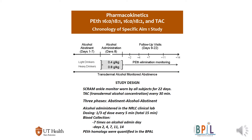This is the design of the study. 52–53 subjects were recruited and agreed to wear a SCRAM ankle monitor for 22 days to measure transdermal alcohol concentration every 30 minutes as a confirmation of abstinence. The study had three phases: an abstinence phase for the first seven days, an alcohol administration day where one of two doses was administered, and then a 14-day abstinence period where blood samples were collected on days 2, 4, 7, 11, and 14 to measure PEth homologues.